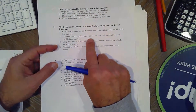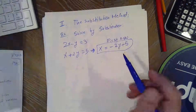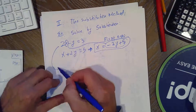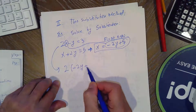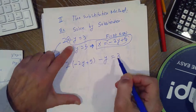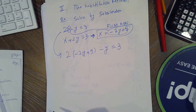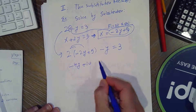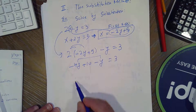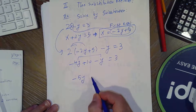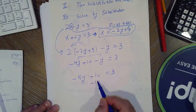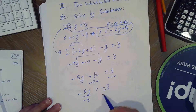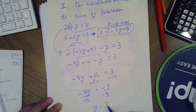Substitute the solution from step one into the other equation and solve for the remaining variable. We plug negative 2y plus 5 in for x: 2 times (negative 2y plus 5) minus y equals 3. So we have negative 4y plus 10 minus y equals 3, giving negative 5y plus 10 equals 3, and then negative 5y equals negative 7, so y equals 7 over 5.